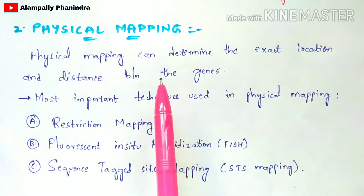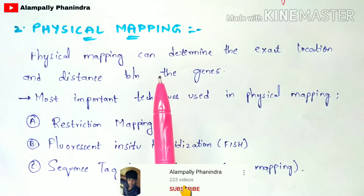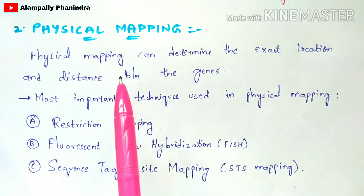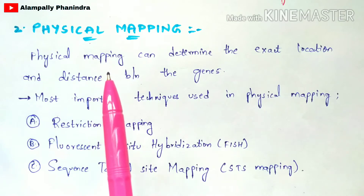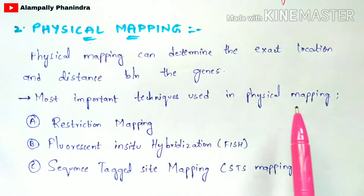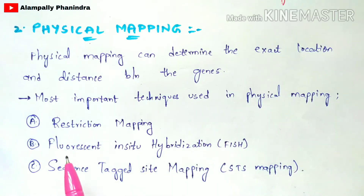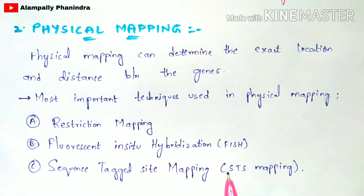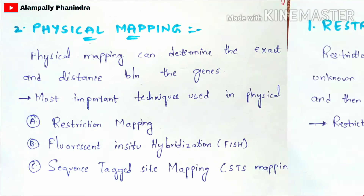If you understand the concept of linkage mapping, then you can understand how crossing over takes place in the meiosis process. The link will be given in the description box. Some of the most important techniques used in physical mapping are restriction mapping, fluorescent in situ hybridization (FISH), and sequence tagged site mapping (STS mapping). In this video we are going to discuss restriction mapping in detail.